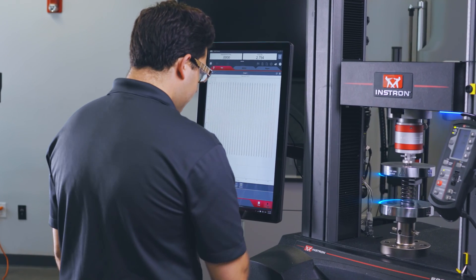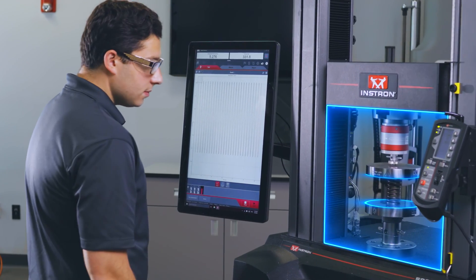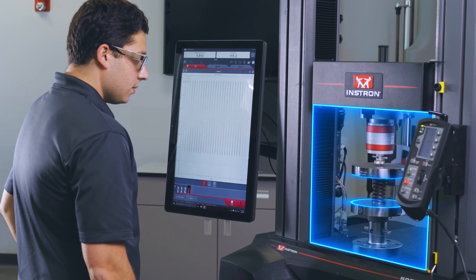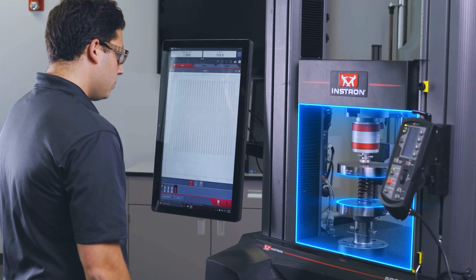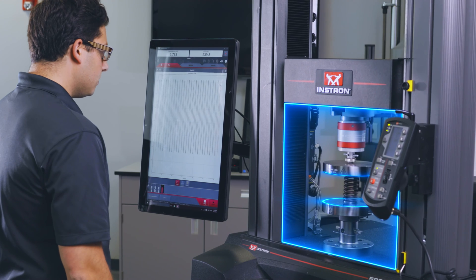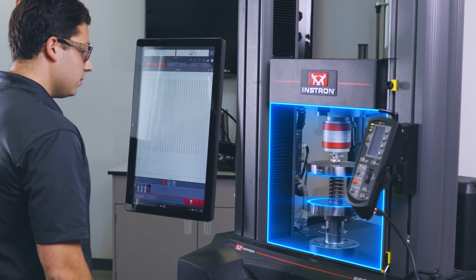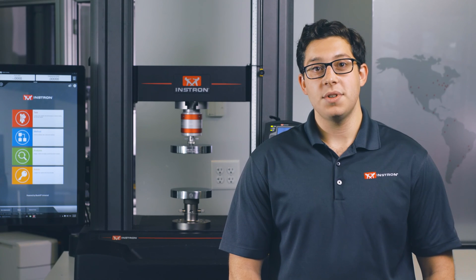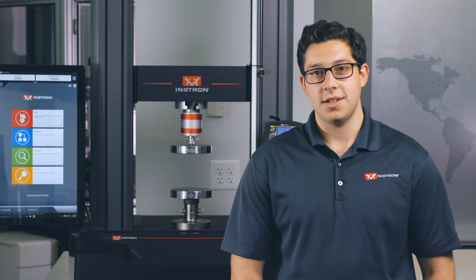The machine has no way of knowing what is in the testing space, whether it be your hand or a test specimen. When the crosshead is in motion, either during a test or return, you must keep yourself out of the testing area. The safety features and procedures we discuss in this video apply to all Instron Universal testing systems.